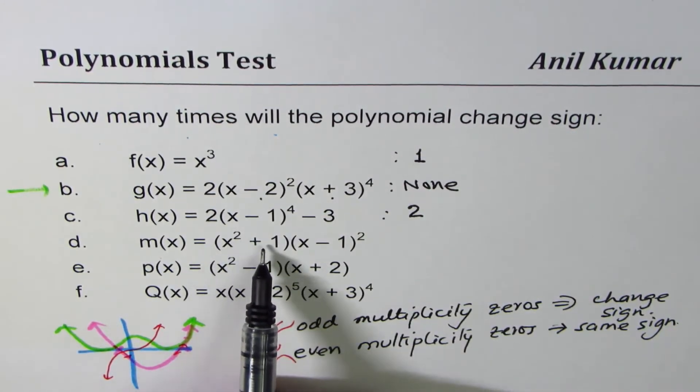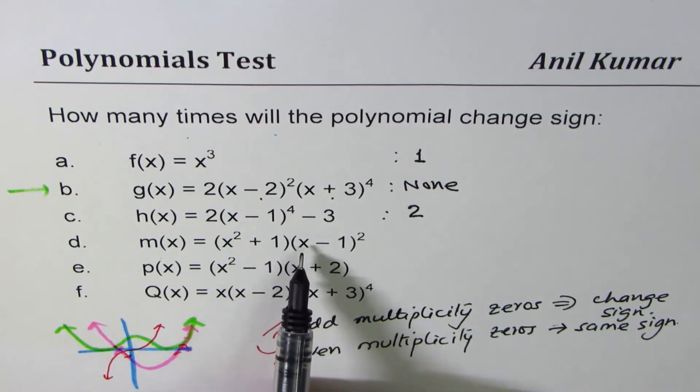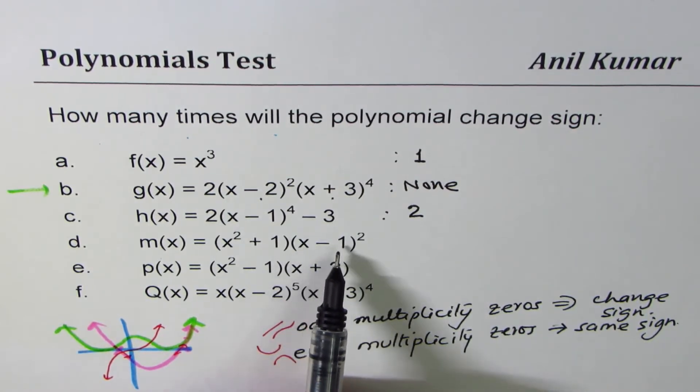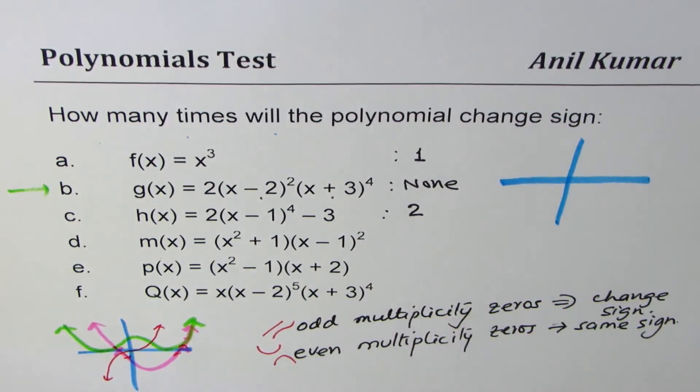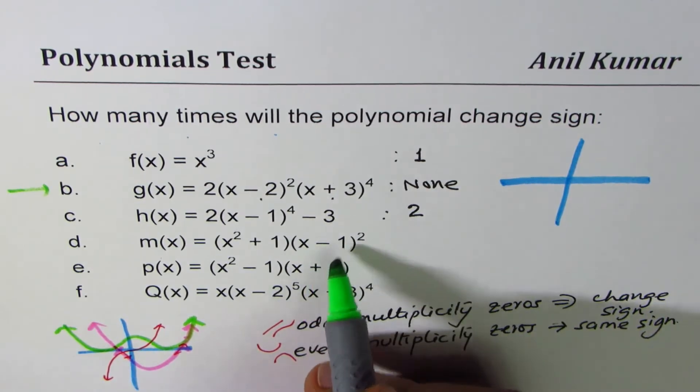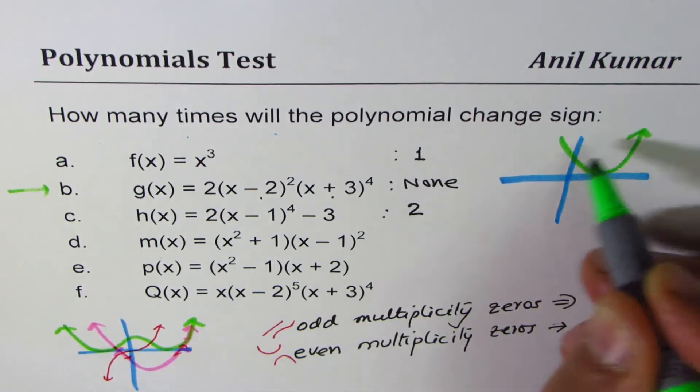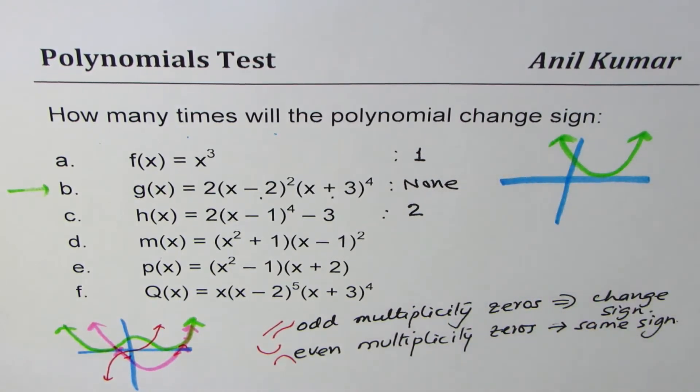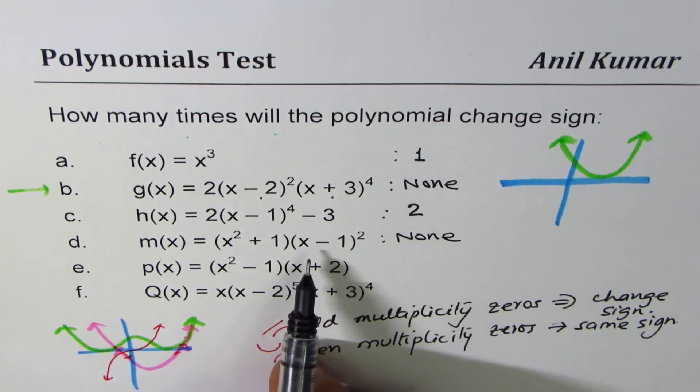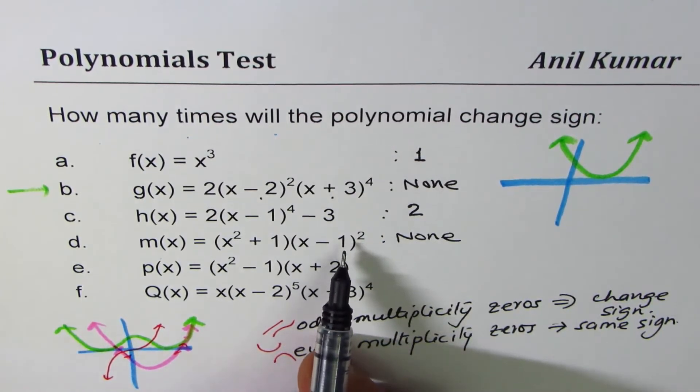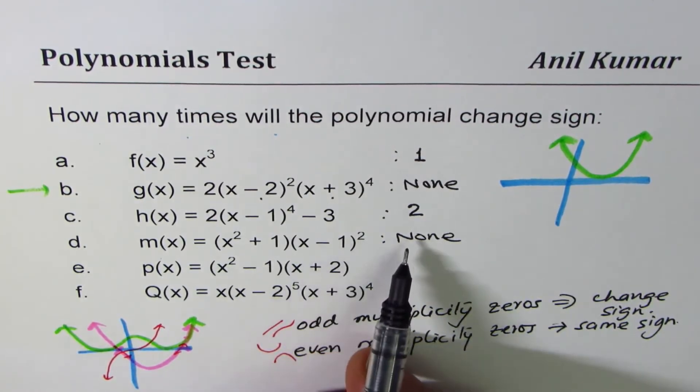Next function here is (x² + 1)(x - 1)². x² + 1 is always positive. x - 1 turns at the x-intercept which is at x equals 1. So if I sketch it, at 1 it turns, so this function will be kind of like this and it is never again going to change the signs. So the answer is none. You can see that there is only one even zero. With even zeros there is no change of sign.